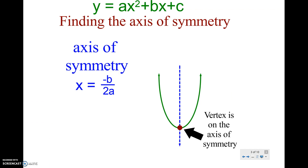In order to find the axis of symmetry, we use the formula x equals negative b over 2a. If the equation is in standard form, it's easy to find 'b' and 'a' — those are the only ones you need in order to find the axis of symmetry.